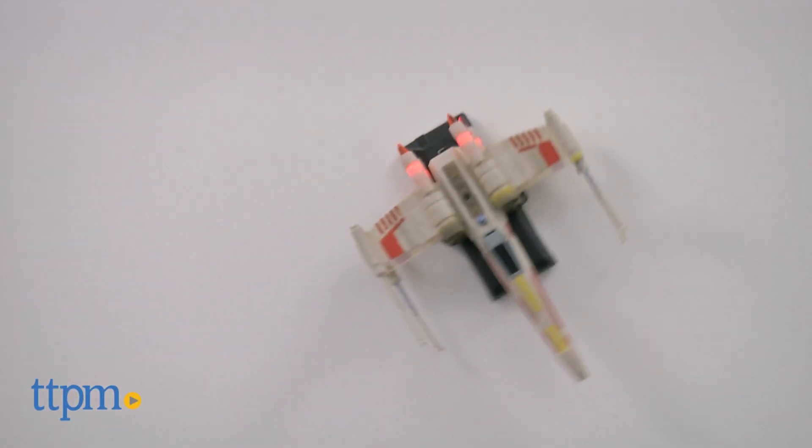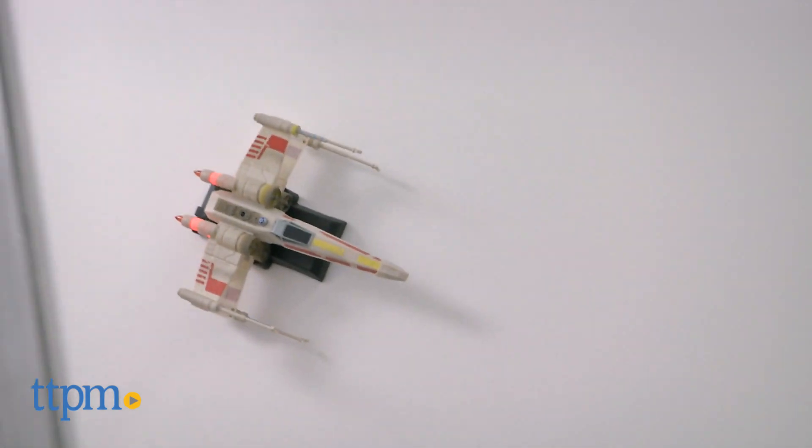Real X-Wing starfighters fly straight up, and upside down, and zip along just above the ground. And now, finally, so does an RC starfighter.